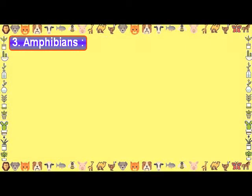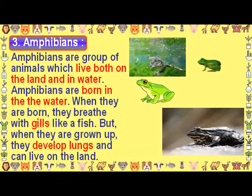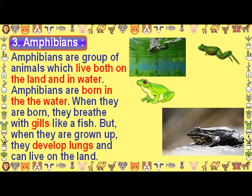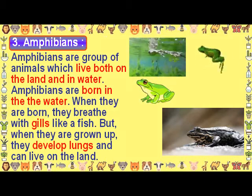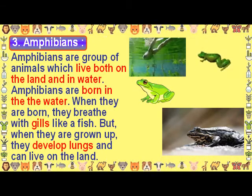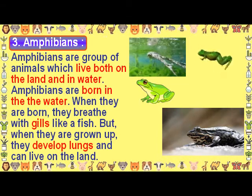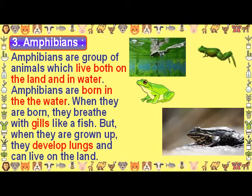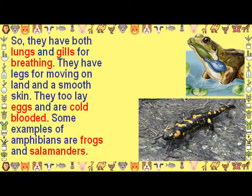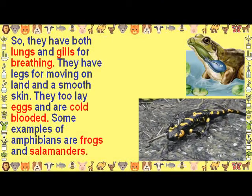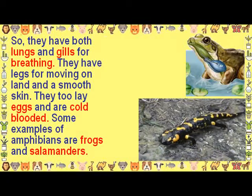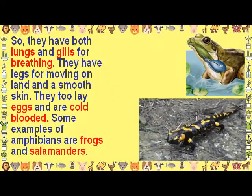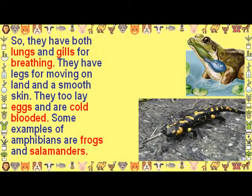Amphibians are a group of animals which live both on land and in water. Amphibians are born in water and breathe with gills like a fish. But when they are grown up, they develop lungs and can live on land. So they have both lungs and gills for breathing. They have legs for moving on land and a smooth skin. They too lay eggs and are cold blooded. Some examples are frogs and salamanders.